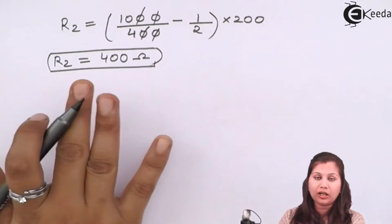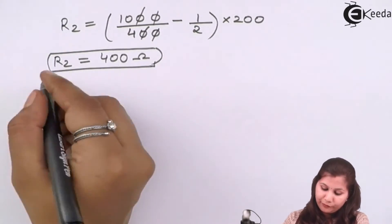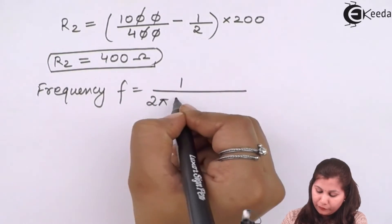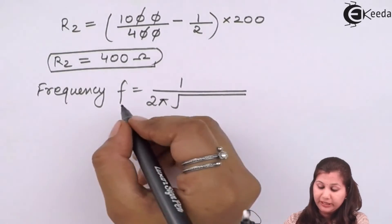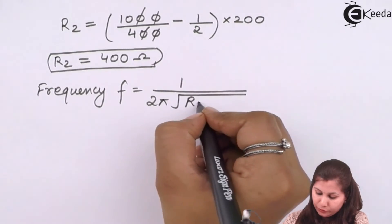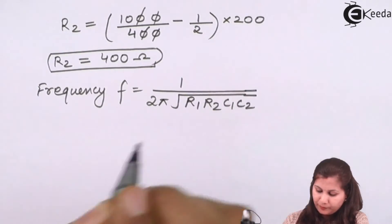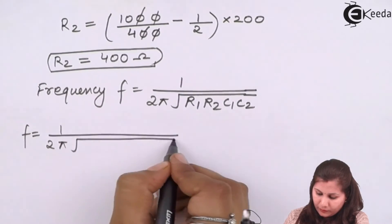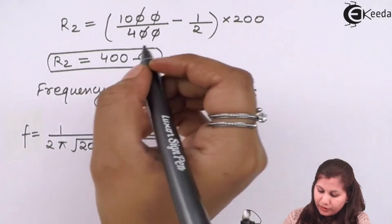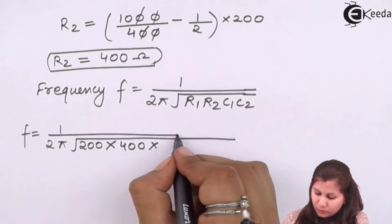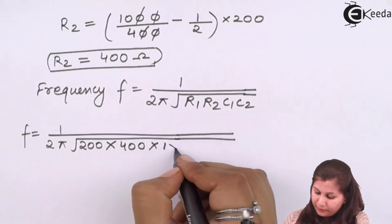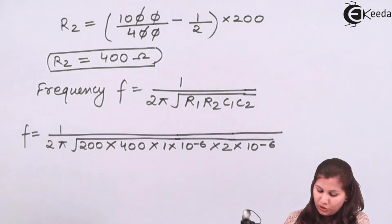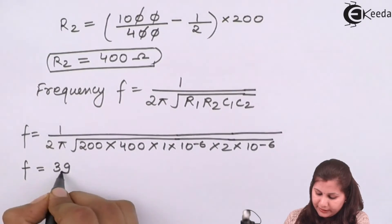The value of unknown resistance R2 is 400 ohms. Now we calculate the frequency. The formula derived from equating real and imaginary parts gives: F = 1 / (2π · √(R1·R2·C1·C2)). Substituting: R1 = 200, R2 = 400, C1 = 1×10⁻⁶ F, C2 = 2×10⁻⁶ F. Solving this expression gives a frequency of approximately 398 Hz.